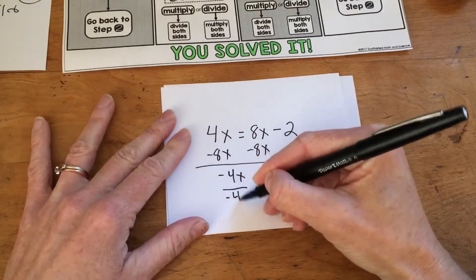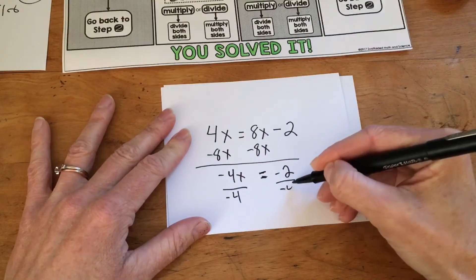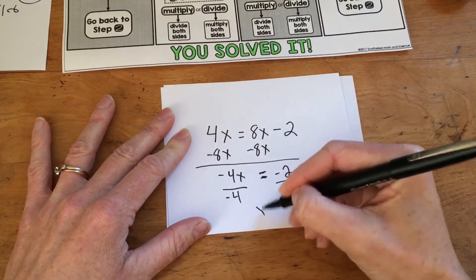I ask them how they undo multiplication. And then this here, we would say that x equals one half.